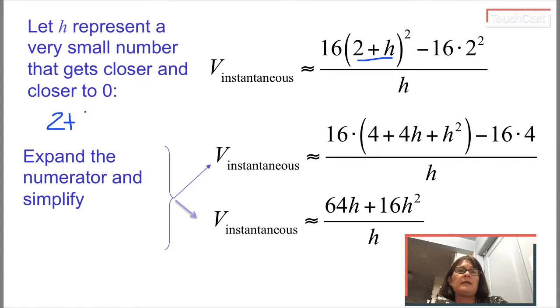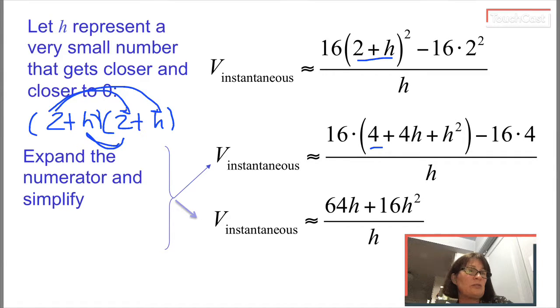If I could do that here, that's 2 plus h times 2 plus h. That takes 4 multiplications. 2 times 2 is 4. 2 times h is 2h plus another 2 times h is another 2h to make 4h. And then the fourth multiplication h squared. So that's how 2 plus h squared turns into 4 plus 4h plus h squared.